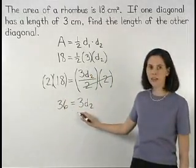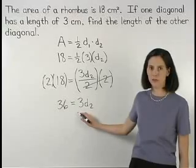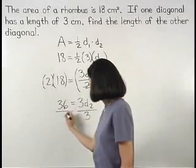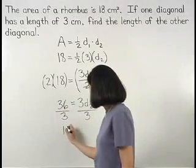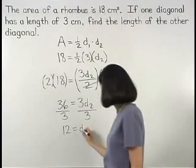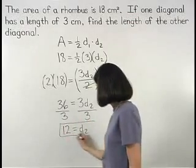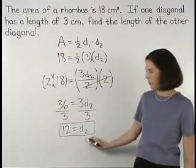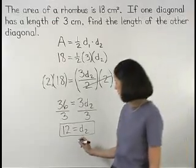So we have 36 equals 3d2. And dividing both sides by 3, 12 equals d2. So the length of the other diagonal of the rhombus is 12 centimeters.